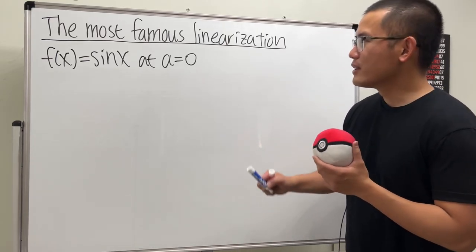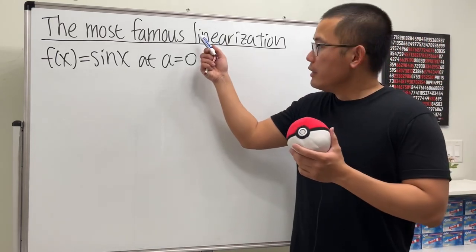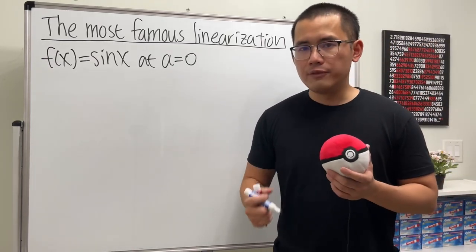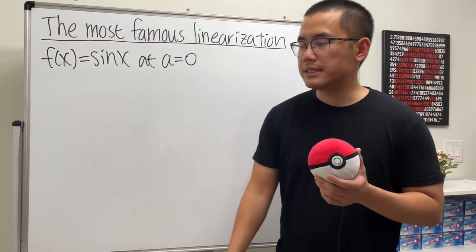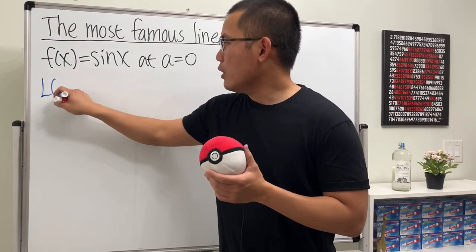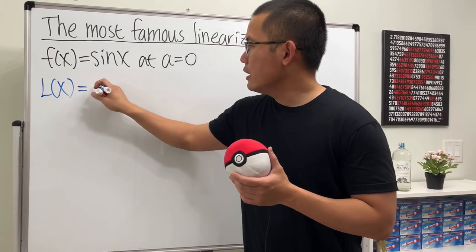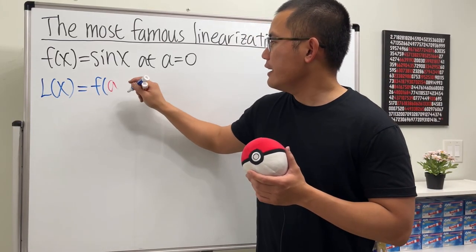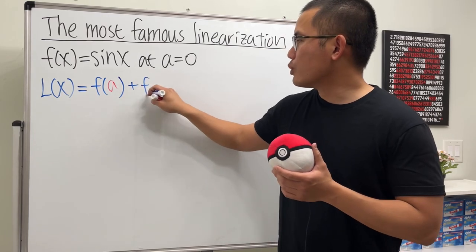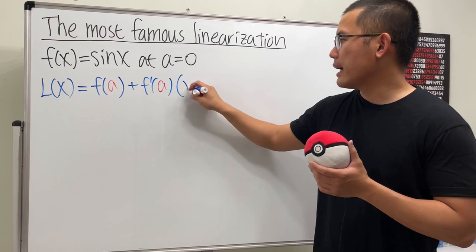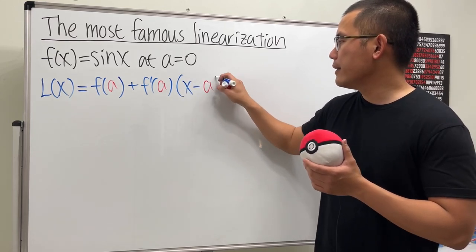So how do we do linearization? This right here is just the equation of the tangent line to this curve at this a value. And this is a very nice formula we can utilize: L(x), the linearization, is going to be the value of the function at that a value, and then we add the derivative at that a value, which is the slope, and we multiply by x minus a.